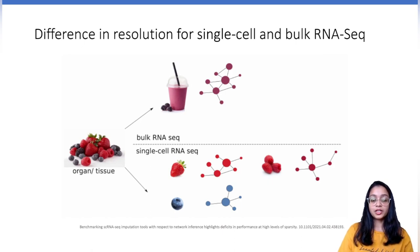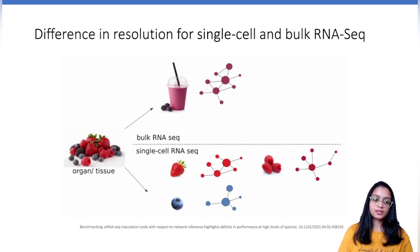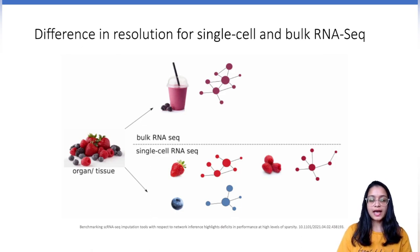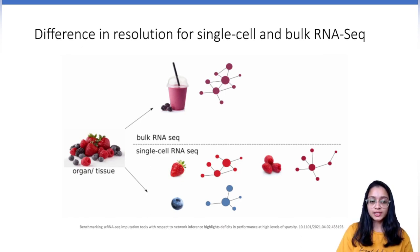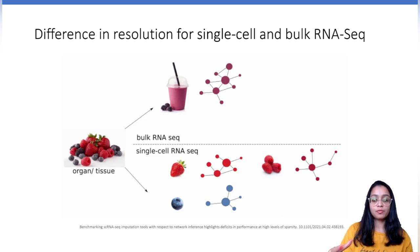Single-cell RNA-seq data, on the other hand, would preserve information from individual cells. In the fruit smoothie example, it would retain information from individual fruits. When we are trying to study gene expression at the cellular level, it helps us to identify cell types. It also allows us to compare one group of cells with others and understand the various patterns of expression that vary between cell types — which would not be possible with bulk, as expression is averaged across all the cells.